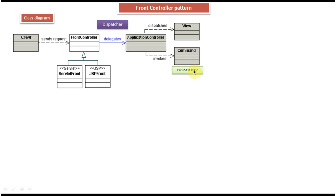So in this tutorial we will see the class diagram of front controller. Here you can see there are four important components involved in this front controller design pattern. The first one is client, the second one is front controller, the third one is dispatcher, and the fourth and final one is application controller. And this client sends a request to the front controller.